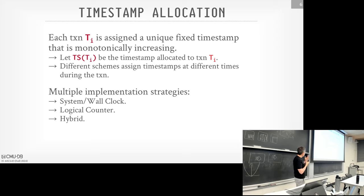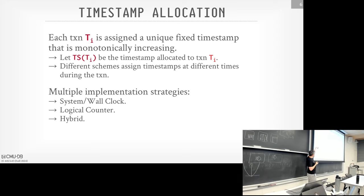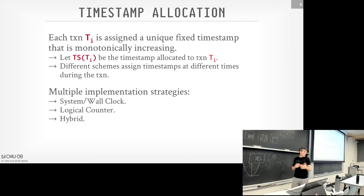There's going to be some part of the system that allocates timestamps to a transaction. You can use wall clock time, or you can ask your local CPU what the current time is — if you make it UTC you don't worry about daylight savings, though clocks drift and there's granularity problems. Another approach is a logical counter: just a 64-bit integer, add one, do a compare-and-swap — that's going to be really fast. In a distributed database setting, keeping a global counter unique across servers becomes a problem. The best approach is typically a hybrid of these two.